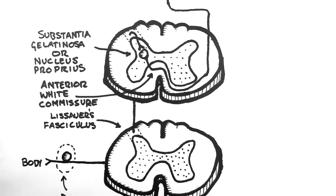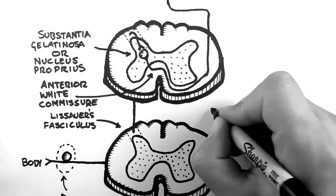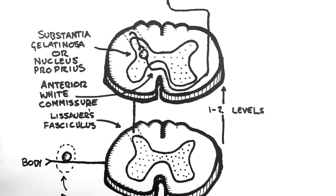I'll finish by reiterating that Lissauer's fasciculus is the route by which the spinothalamic tract ascends or descends one to two levels before synapsing to the spinal cord grey matter. And like the dorsal column medial lemniscus pathway, this is a three-neuron pathway.